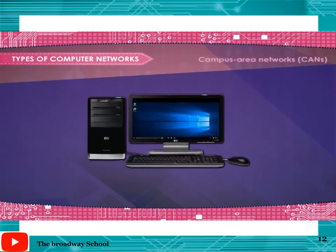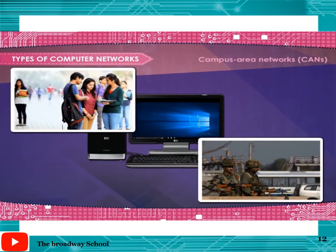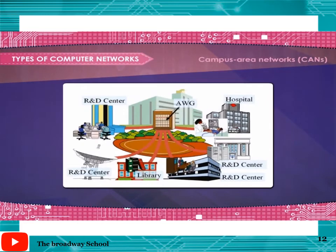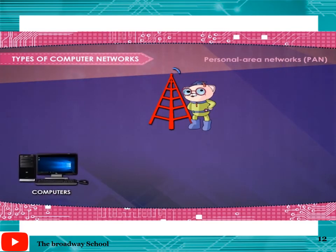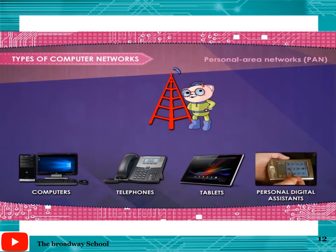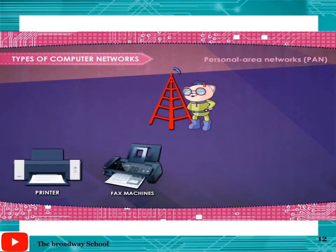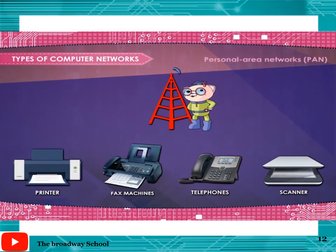For example, the cable TV network. Campus Area Networks or CANs: the computers are within a limited geographic area such as a campus or military base — for example, an intranet working within IIT. Personal Area Networks or PAN: a computer network used for data transmission amongst devices such as computers, telephones, tablets, and personal digital assistants — for example, printers, fax machines, telephones, and scanners are connected through a network.